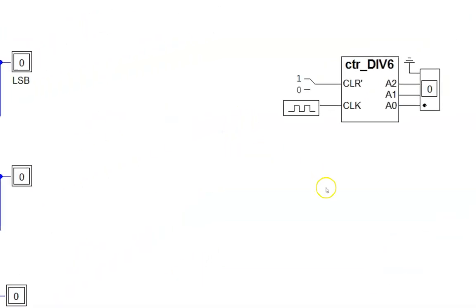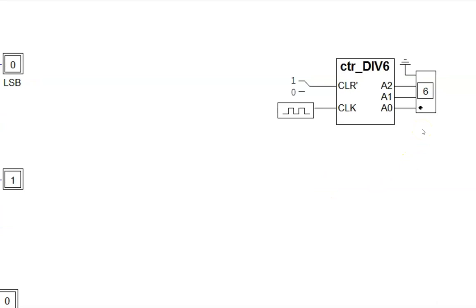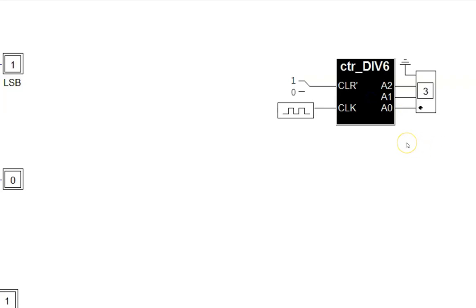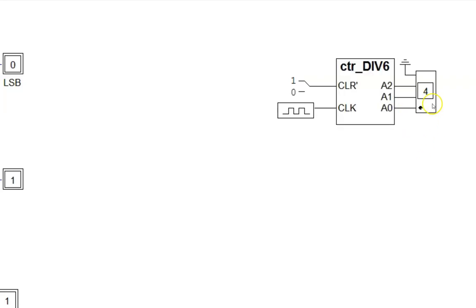Easier to see is when we condense the circuit into a device symbol and use a hex display to watch the count. Here we have a divide by 6 counter. It counts from decimals 0 through 5 and then recycles back to 0 and repeats the count. This will run forever if we let it.